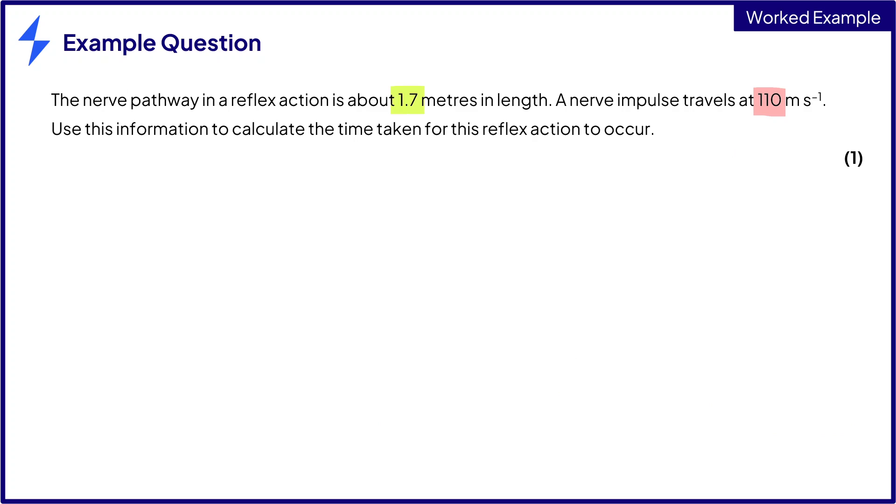A question you could get asked about the reflex arc is to calculate the speed of a nerve impulse. An example is shown here. In order to work out the time taken for the impulse to occur, we need to use the equation speed equals distance divided by time. For time, we rearrange this equation to make time equals distance divided by speed.